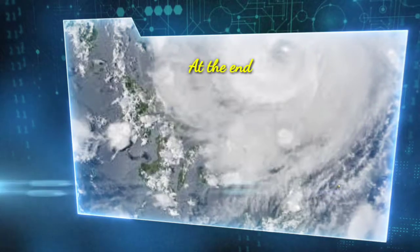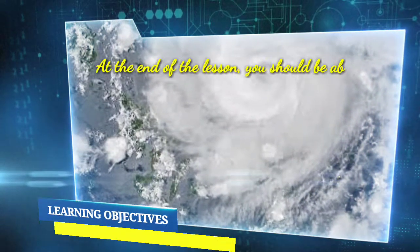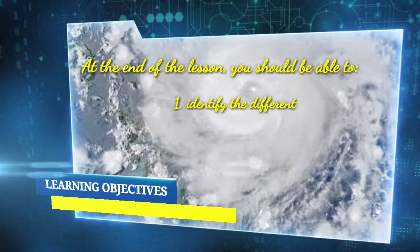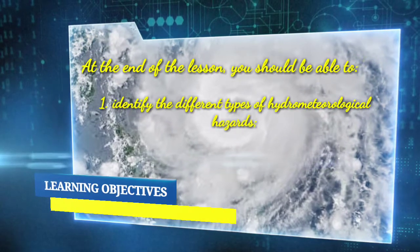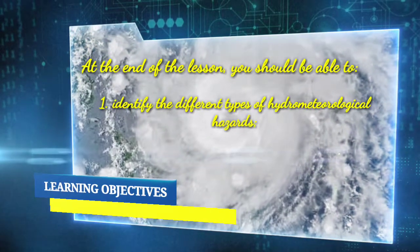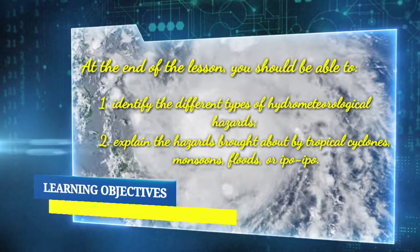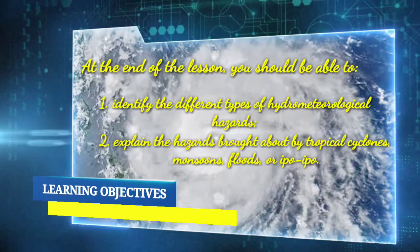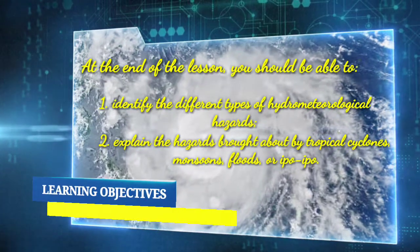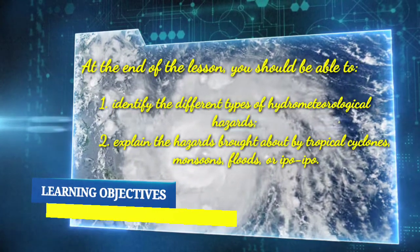At the end of the lesson, you should be able to: 1. Identify the different types of hydrometeorological hazards, and 2. Explain the hazards brought about by tropical cyclones, monsoons, floods, or ipo-ipo.